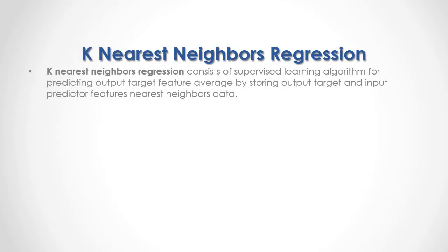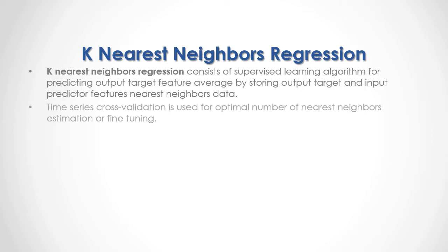K-Nearest Neighbors Regression consists of a supervised learning algorithm for predicting the output target feature average by storing output target and input predictor features' nearest neighbors' data. Time series cross-validation is used for optimal number of nearest neighbors' estimation or fine-tuning.